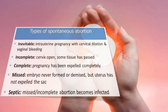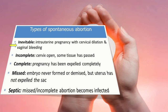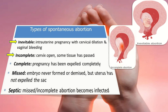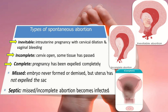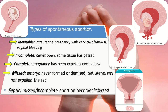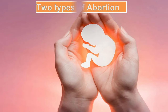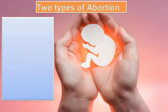The types of spontaneous abortion include: inevitable abortion, which involves intrauterine pregnancy with cervical dilatation and vaginal bleeding; incomplete abortion, where the cervix is open and some tissue has passed; complete abortion, where the pregnancy has been expelled completely; missed abortion, where the embryo never formed or demised but the uterus has not expelled the sac; and septic abortion, where missed or incomplete abortion becomes infected.